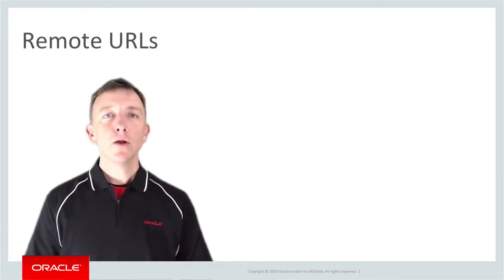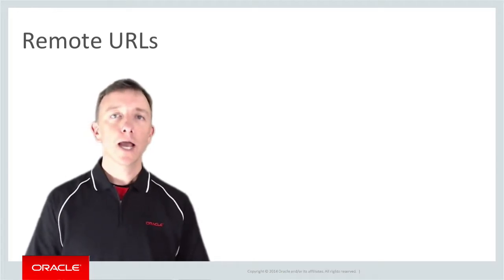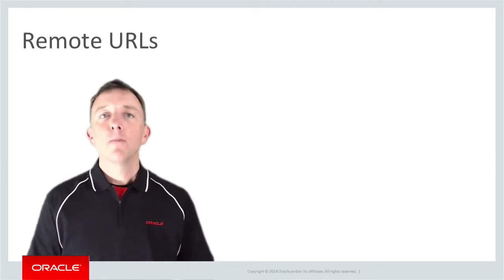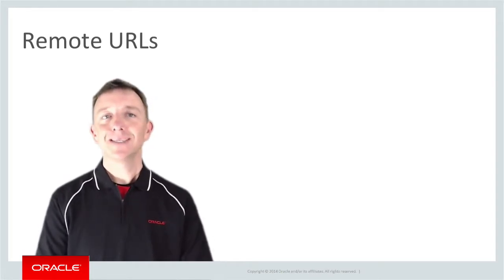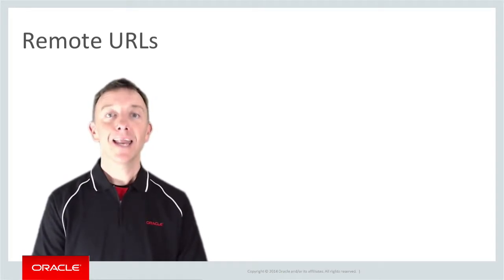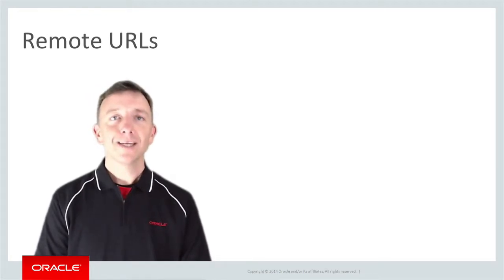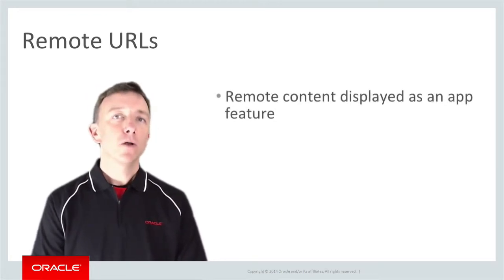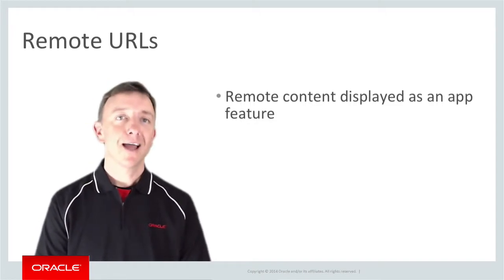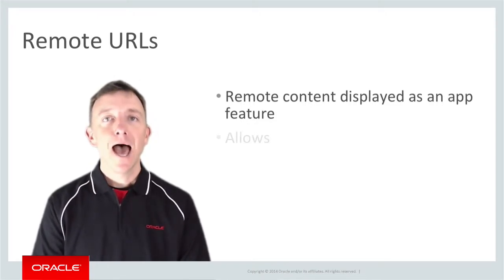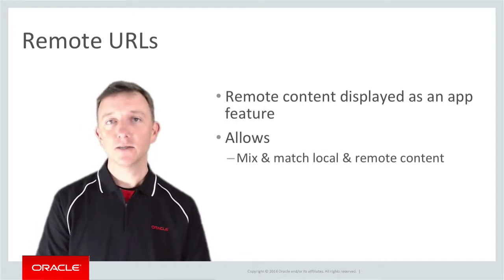The Remote URL creates a page in your application that isn't based on a local AMX or HTML page, but rather makes a call to a remote website and embeds that in your application via an in-app browser. The Remote URL is embedded in your application as a feature like AMX and HTML pages, and it allows you to mix and match both local and external content into your application.